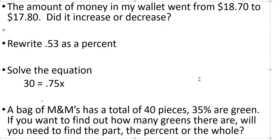The amount of money in my wallet went from 1870 to 1780 — did it increase or decrease? From 18 to 17, that is a decrease.